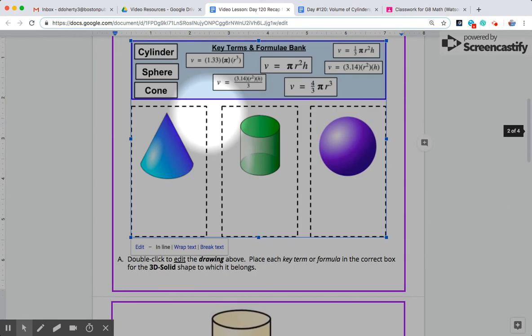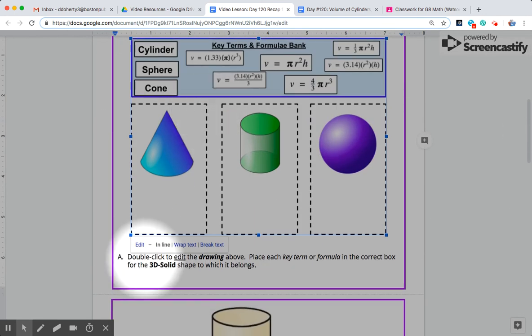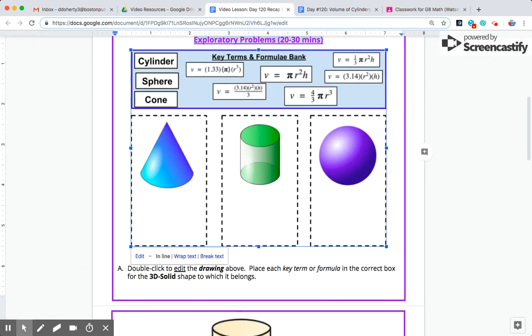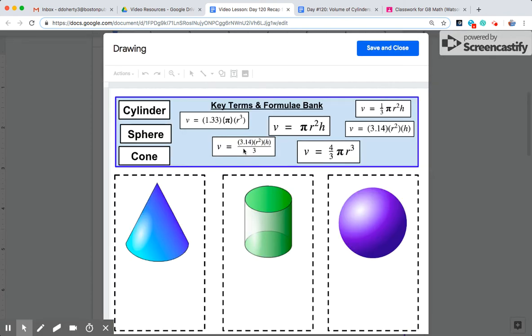So as we take a look at problem A, I'm going to read through that quickly. It says to double-click to edit the drawing above, which is how we edit any of these drag and drop problems. And then we're going to place each key term or each formula into the correct box for the different shapes that we see here. So if I double-click on this drawing to start editing,